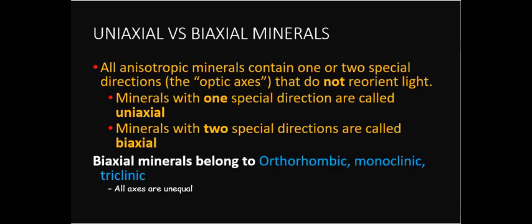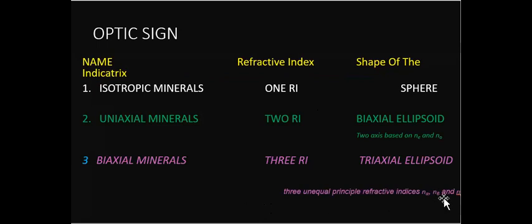The difference between uniaxial and biaxial minerals: all anisotropic minerals contain one or two special directions that do not reorient light. Minerals with one such direction are uniaxial; minerals with two such directions are biaxial. Biaxial minerals belong to orthorhombic, monoclinic, and triclinic systems, with refractive indices represented as n-alpha, n-beta, and n-gamma.